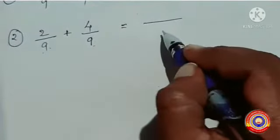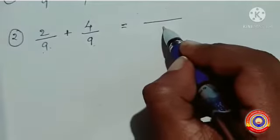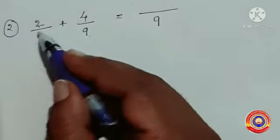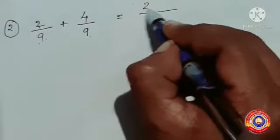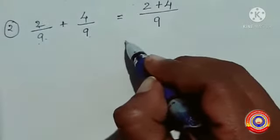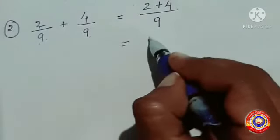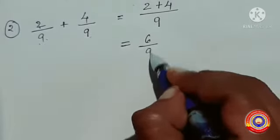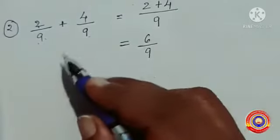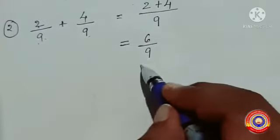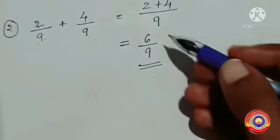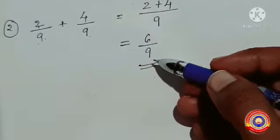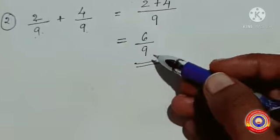Next question: 2 by 9 plus 4 by 9. Here the denominators are the same, that is 9. Write 9 as the denominator. Now we have to find the sum of the numerators, that is 2 plus 4. 2 plus 4 is equal to 6. Then 2 by 9 plus 4 by 9 is equal to 6 by 9. Now we have to find the lowest form of 6 by 9.